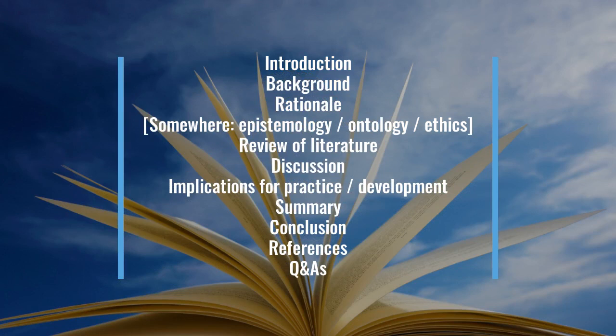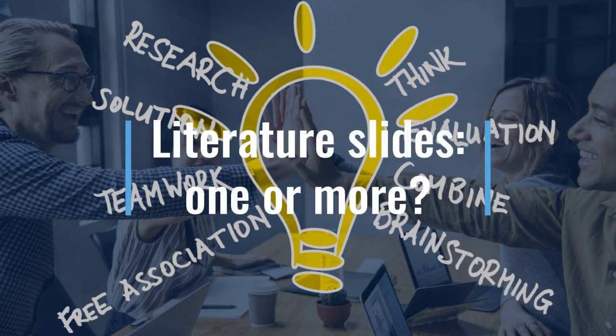The next slide or slides that would traditionally follow are your overview or review of the literature. After that you can have a wider discussion looking at what the literature says in relation to, for example, what you've experienced in practice, and then draw out your various implications for practice or practice development. For the literature review section you may use more than one slide — one could give an overview in a diagrammatic form, a spider diagram or mind map, showing the different types of literature you've looked at, and then another slide showing the key themes coming out of those papers.